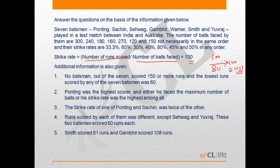Some additional information is given. No batsman out of the 7 scored 150 or more, meaning the highest scorer did not score 150 or more runs. The lowest runs scored by any of the 7 batsmen was 60.